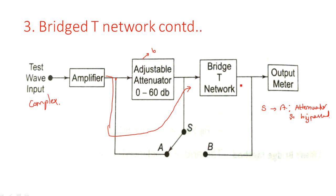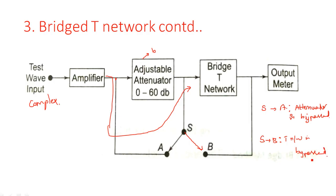At the input of the bridge-T network, what is the purpose? It suppresses the fundamental frequency component F1. So in the input waveform, if any fundamental frequency component is present, it is suppressed by passing through this bridge-T network. In the second case, we connect the switch to B. When the switch is connected to B, the bridge-T network is bypassed.